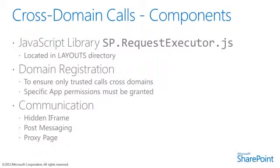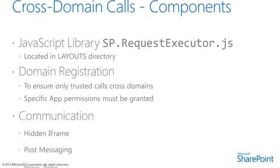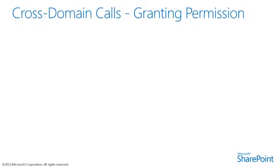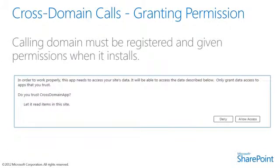When communicating across domains in this manner, we have to register the specific domains in our app that are trusted to make these calls, and we rely on the user installing the app to provide specific permission trusting our app. In this slide, we see how a user trusts the app to read data from the site. There is additional registration that we'll need to do within the app to make this work, as we'll see in the demo in just a moment.